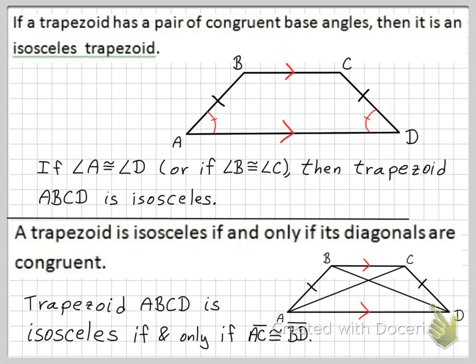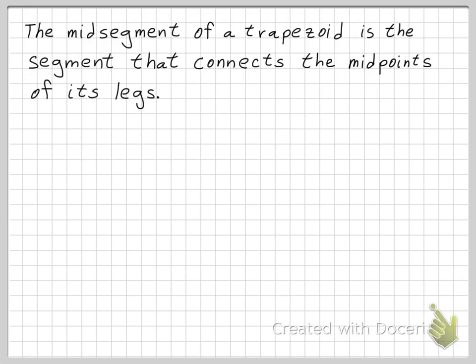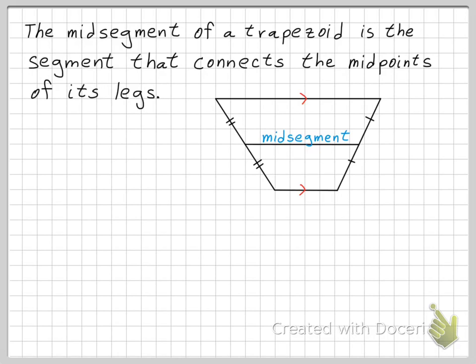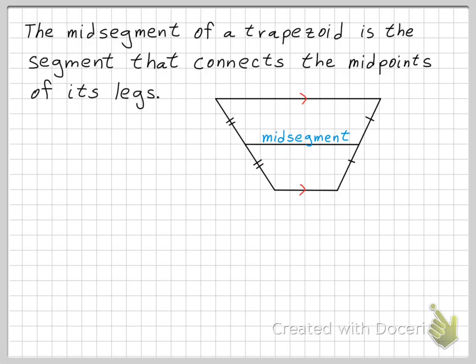Moving right along: you may recall that a mid-segment of a triangle connects the midpoints of two sides. Similarly, the mid-segment of a trapezoid is the segment that connects the midpoints of its legs. In a trapezoid, the mid-segment bisects each leg.